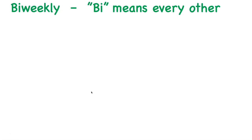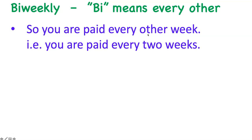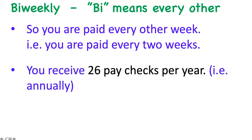Now let's look at another type of pay period: bi-weekly. This can get a little confusing, but the way I remember it is the prefix 'bi' means every other in finance — that simply means you are paid every other week, or every two weeks. So remember that for your finance class. In other words, you're going to receive 26 paychecks per year, or 26 paychecks annually.